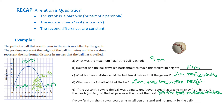And part F: how far from the thrower could a 1.6-meter tall person stand and not get hit by the ball? Remember that the initial height of the ball was 1.5 meters — the person throwing the ball is holding it at 1.5 meters. So obviously, if this person is standing right in front of them, they're going to get hit by the ball.